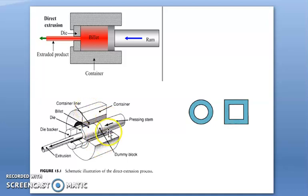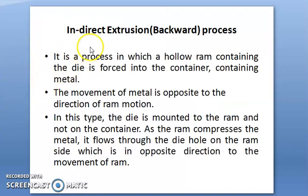The direct extrusion finds application in the manufacture of solid rods, bars, hollow tubes—that is hollow circular tubes or hollow square blocks—according to the design and shape of the die. This is all about direct extrusion. Next, we see indirect extrusion process.